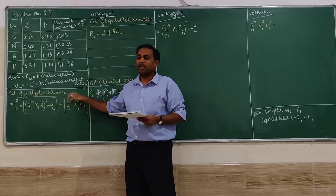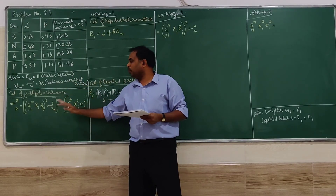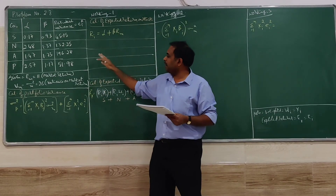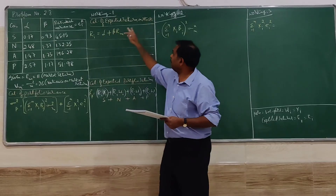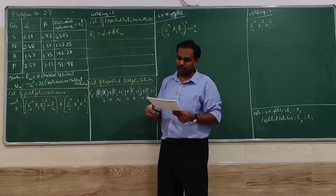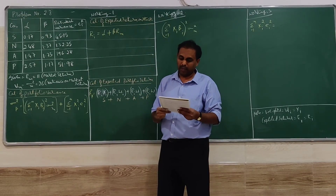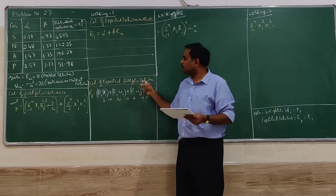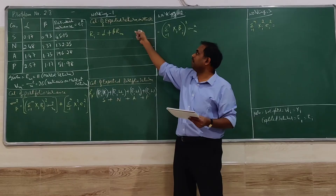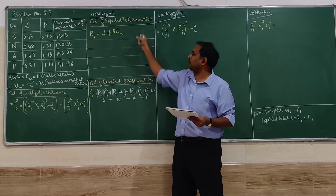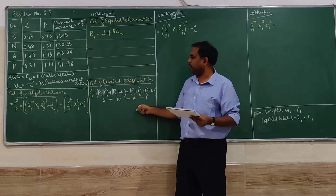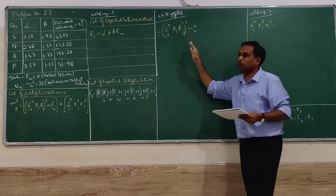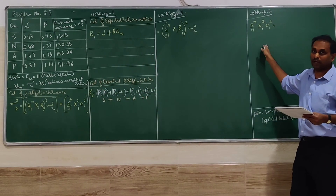We have to calculate portfolio variance and the expected return of the portfolio — that is portfolio return. To find the portfolio return, we have to find the expected return on each stock. Then to work out the portfolio variance, we have to go for working 2 and working 3.